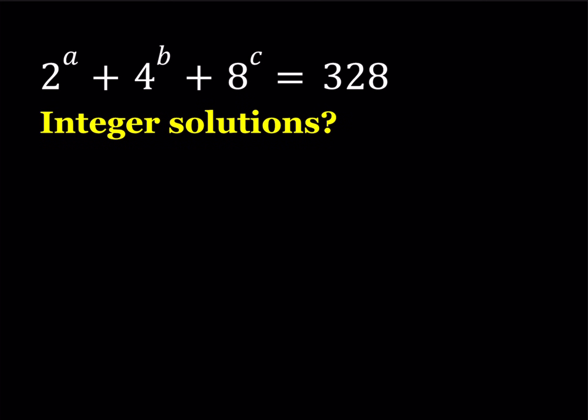Hello everyone, in this video we're going to be solving an equation for integer solutions. We have 2 to the power a plus 4 to the power b plus 8 to the power c equals 328, and a, b, c are integers. So let's take a look at this equation.